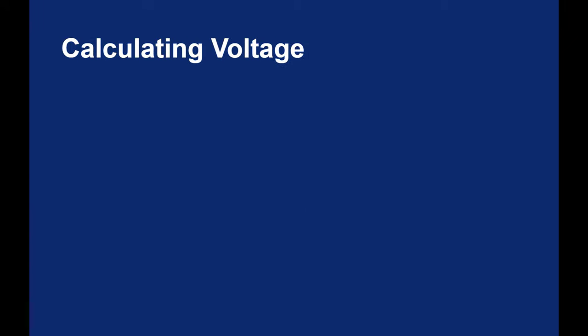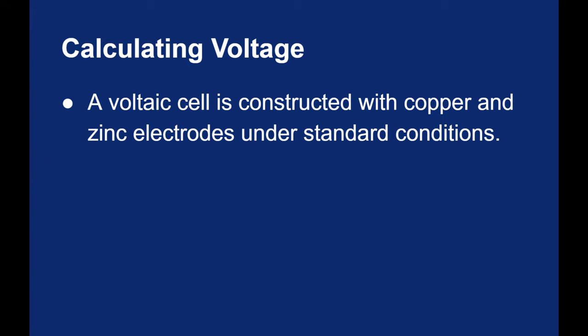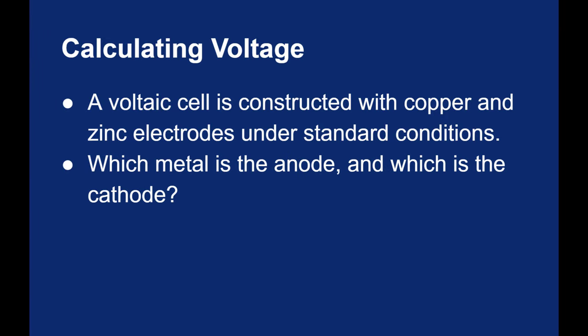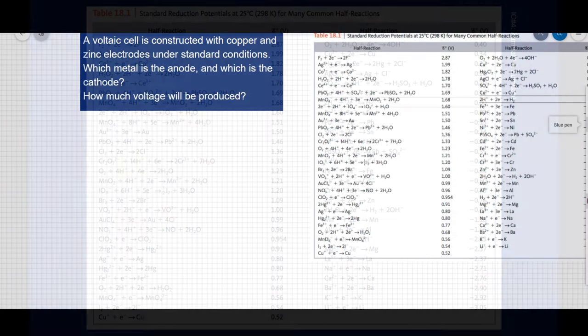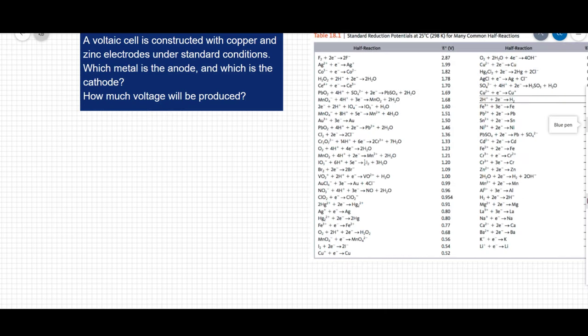Let's finish up by looking at the values of those standard potentials. Let's see if we can calculate the voltage we would expect a voltaic cell to produce. I'm going to make a voltaic cell constructed with copper and zinc electrodes under standard conditions. I want to know several things. I want to know which metal is the anode, and which metal is the cathode, and how much voltage will be produced if we make this cell under standard conditions. We're going to have to use this chart to answer the question. We're told that this is a voltaic cell, which means that this process is happening spontaneously. If this is happening spontaneously, that means the metal that wants to oxidize is oxidizing, and the metal that wants to reduce is reducing. So let's take a look at our two metals.